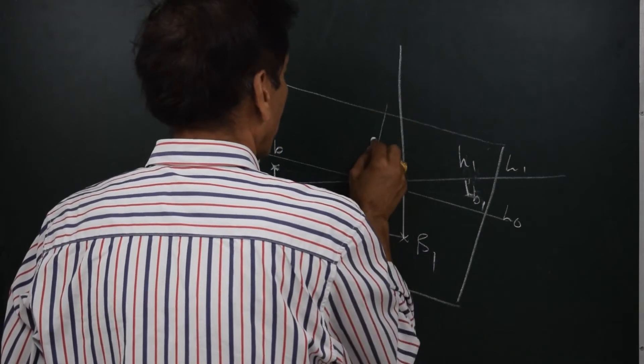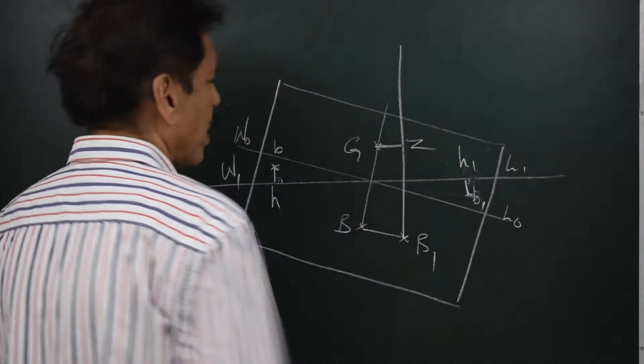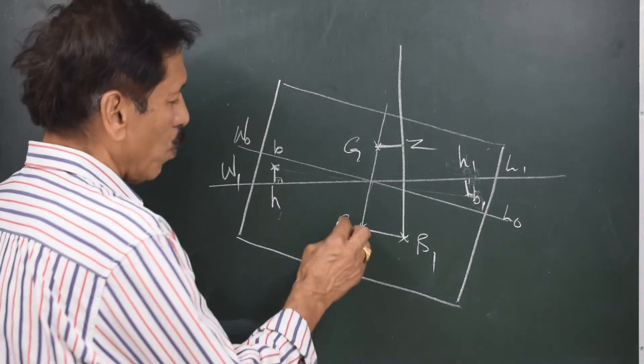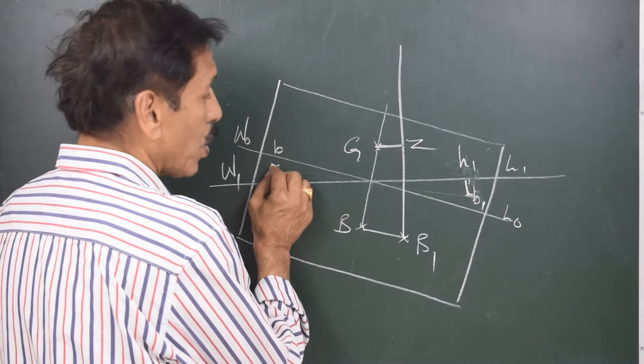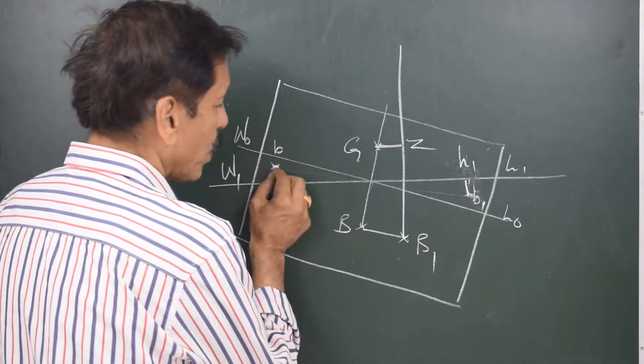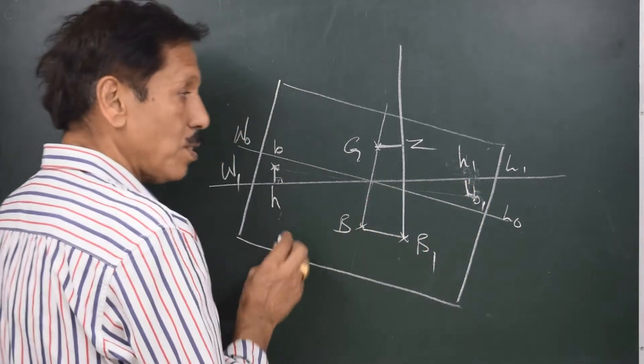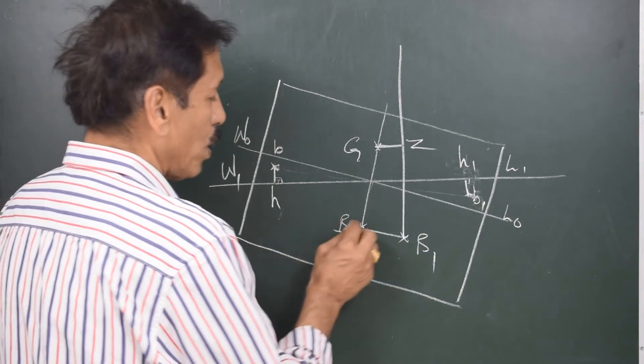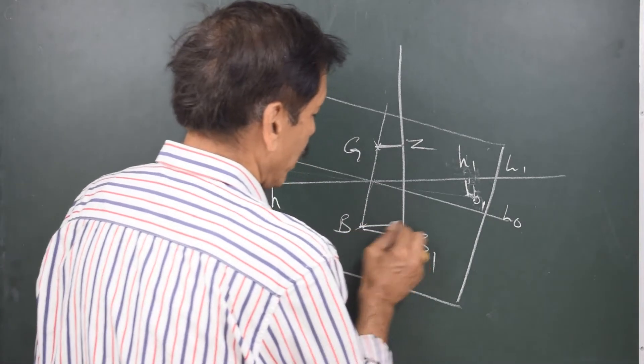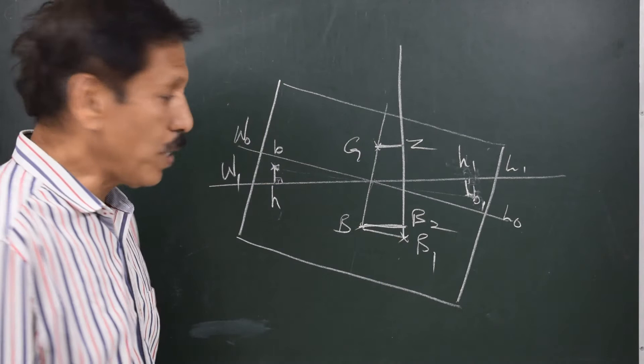If we want to find out a shift of center of buoyancy not parallel to BB1, but parallel to HH1, that means perfectly athwart shift of center of buoyancy would be this way. I will call it B2.